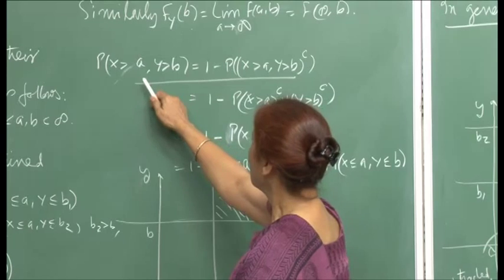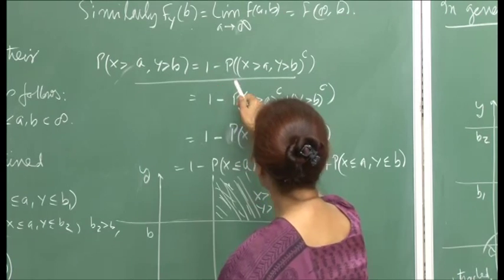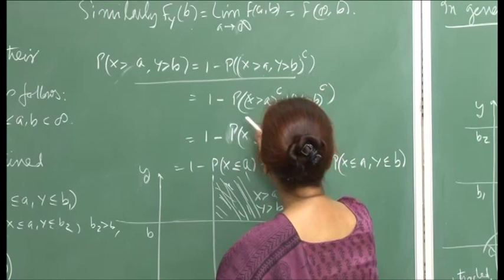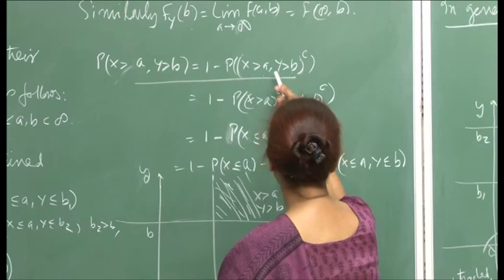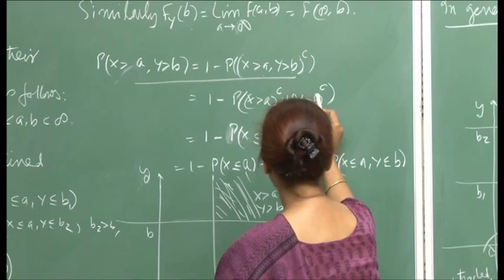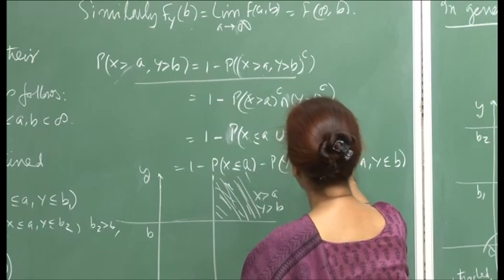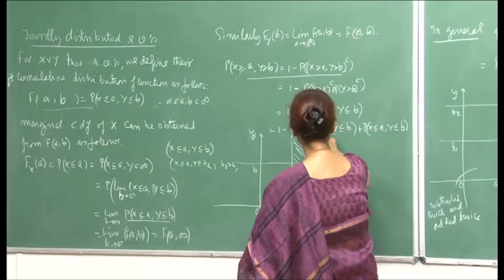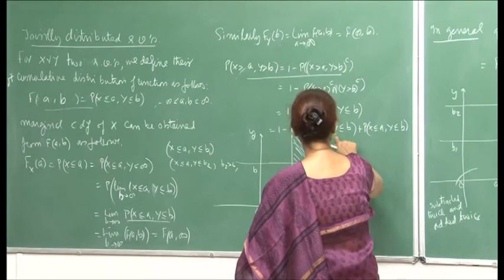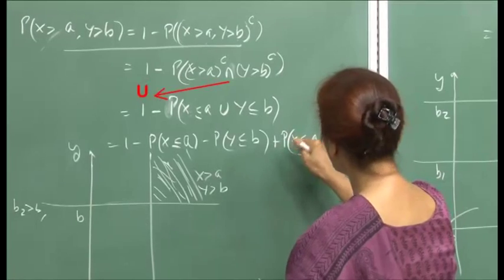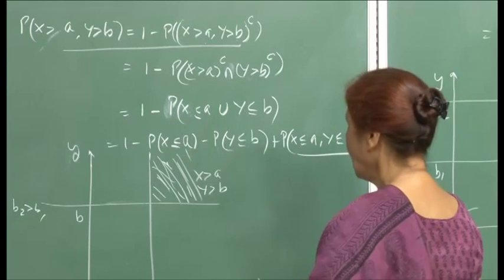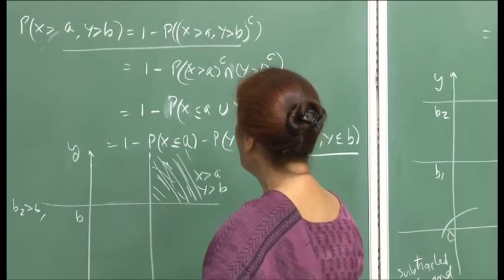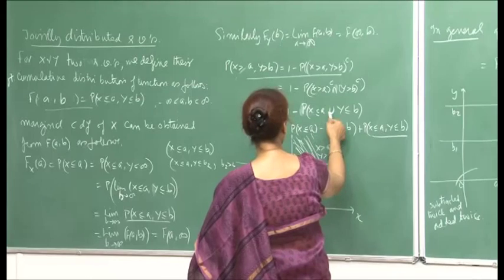Suppose you want to compute the probability of X > a and Y > b. We can write this as 1 minus the probability of the complement — X > a, Y > b — complement. Since we can write this as X ≤ a union Y ≤ b by De Morgan's law, this becomes 1 minus probability X ≤ a minus probability Y ≤ b plus probability X ≤ a and Y ≤ b.